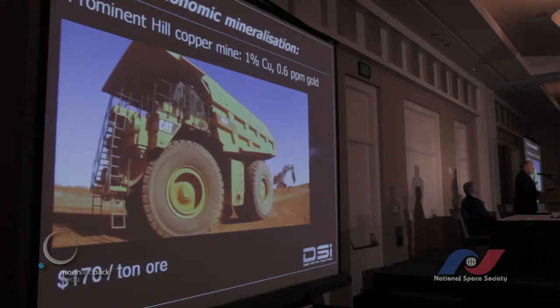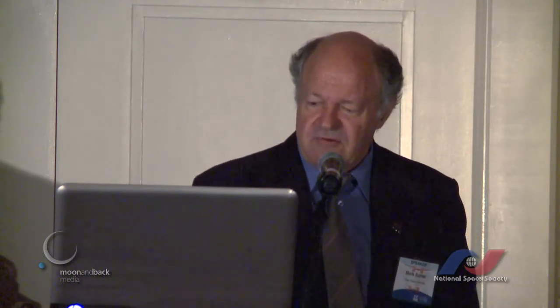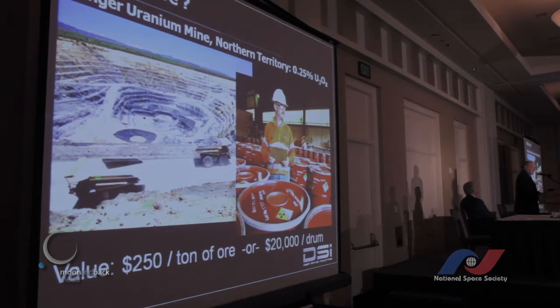Ore is economic mineralization. Here's a picture of a 250-tonne haul truck at a large open-pit copper mine in central South Australia - one of my clients. The material they're digging there is worth about $170-$180 per tonne as it's loaded into the truck. Here is another one of my clients, a uranium mine in the Northern Territory. They mine a quarter percent uranium content in the rock, using 250-tonne haul trucks. Once processed, you get uranium out at something like 95% U3O8 in drums - about $20,000 per drum.